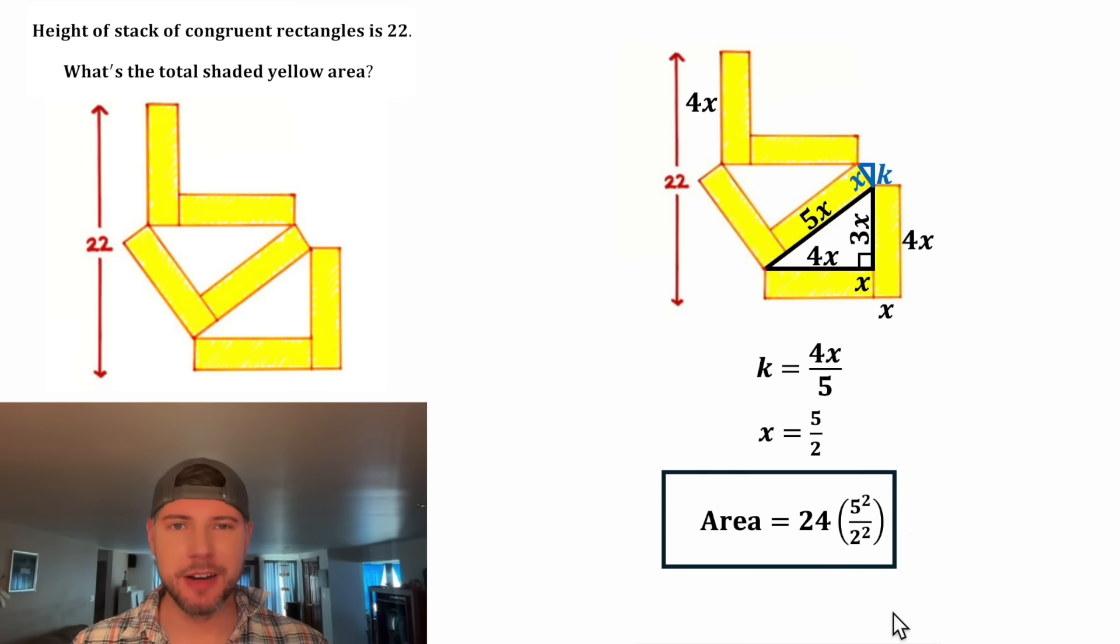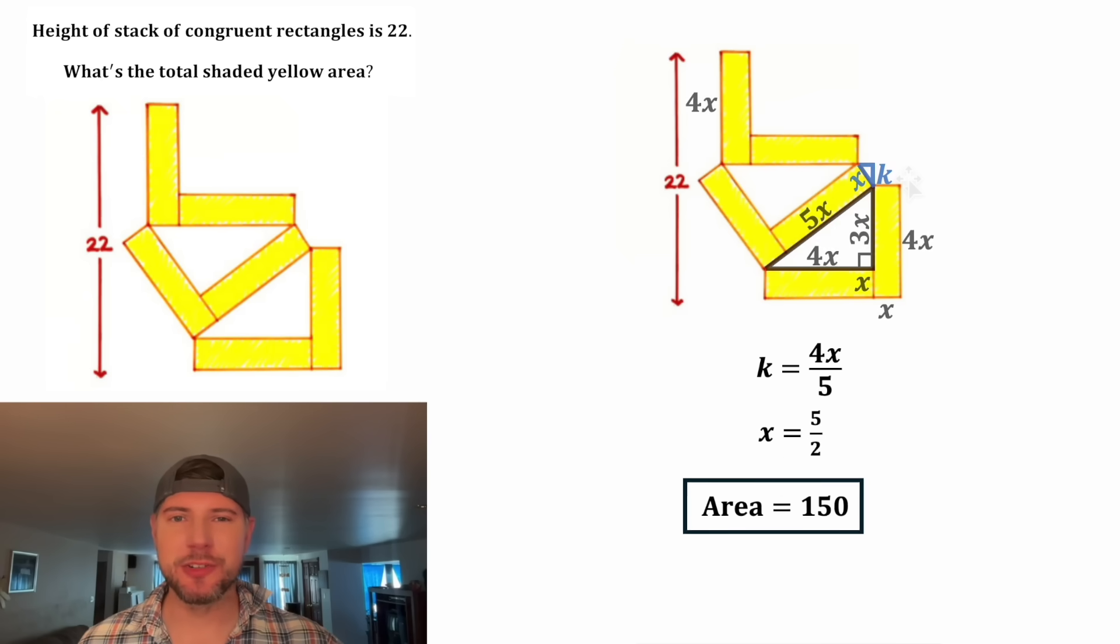To do 5 halves squared, we can square both the top and the bottom. 5 squared is equal to 25, and 2 squared is equal to 4. 24 divided by 4 is 6. And 6 times 25 is equal to 150. And that is the answer to our question.